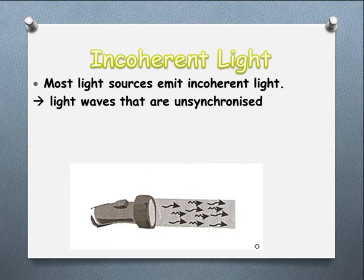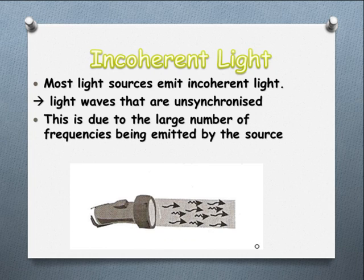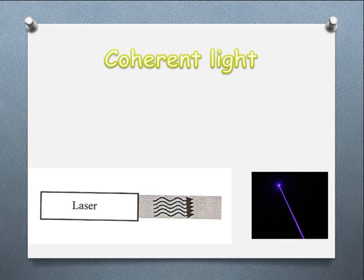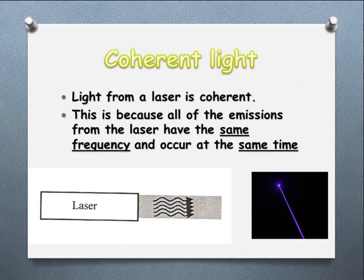Contrasting that with a coherent light source — which is generally a laser — you'll notice that all the crests and troughs are lining up. Basically we're emitting the same frequency at exactly the same time, and the result is all these light waves are in sync: same crest, same trough, they all line up. These definitions are pretty much foundational to the rest of the work we're going to do looking at light.